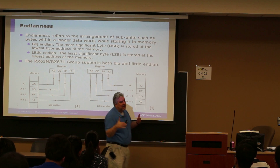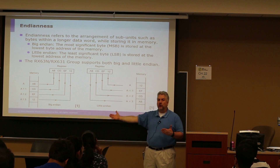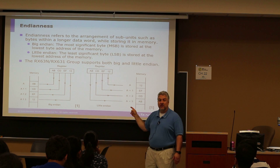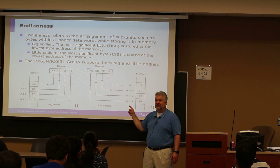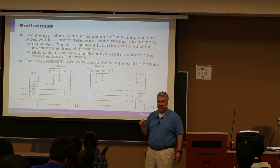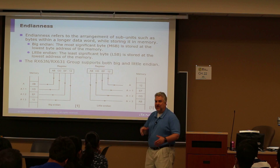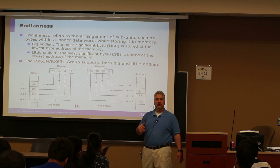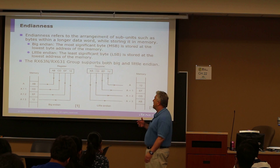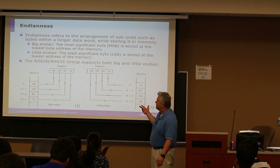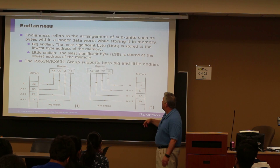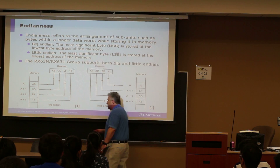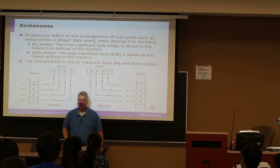How this came about is that one computer manufacturer did it one way and another did it another way. The Renaissance processor actually allows you to specify which one you want to use. Historically, IBM did it one way and Digital Equipment Corporation did it the other way. Just remember there is little endian — little end stored first — and big endian — big end stored first.